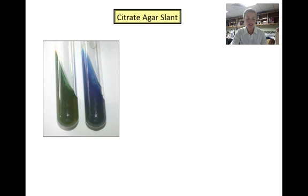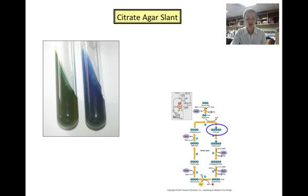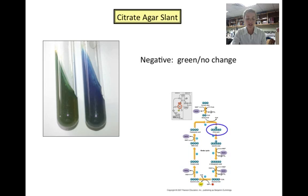The citrate agar slant tests an organism's ability to use citrate as its sole carbon source when there is no glucose to ferment. Citrate or citric acid is an intermediate in the Krebs cycle, so an organism that can use citrate is able to perform the Krebs cycle. A citrate test is negative when the agar stays green for a few days after inoculation. An organism that is strictly fermentative will not be able to survive on citrate alone and will produce a negative citrate test. A positive citrate test occurs when the agar turns blue as a result of byproducts from the Krebs cycle changing the color of the media.